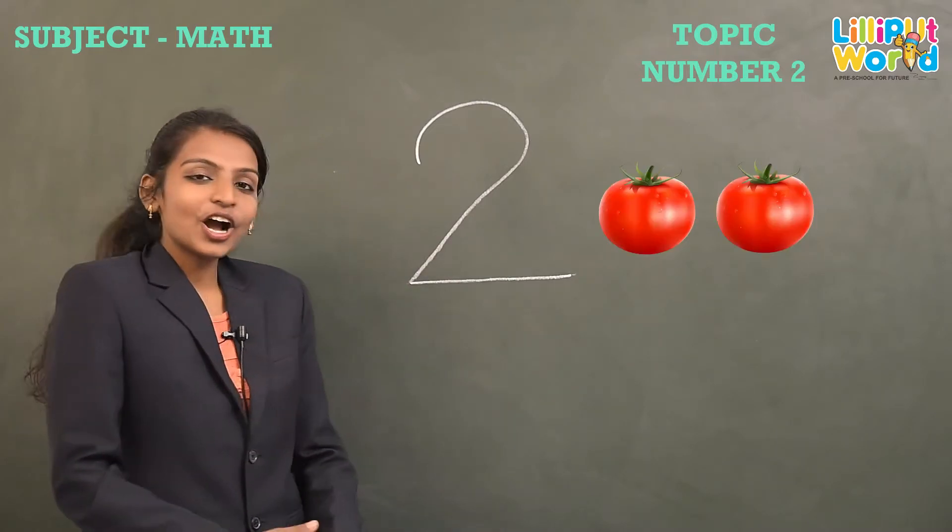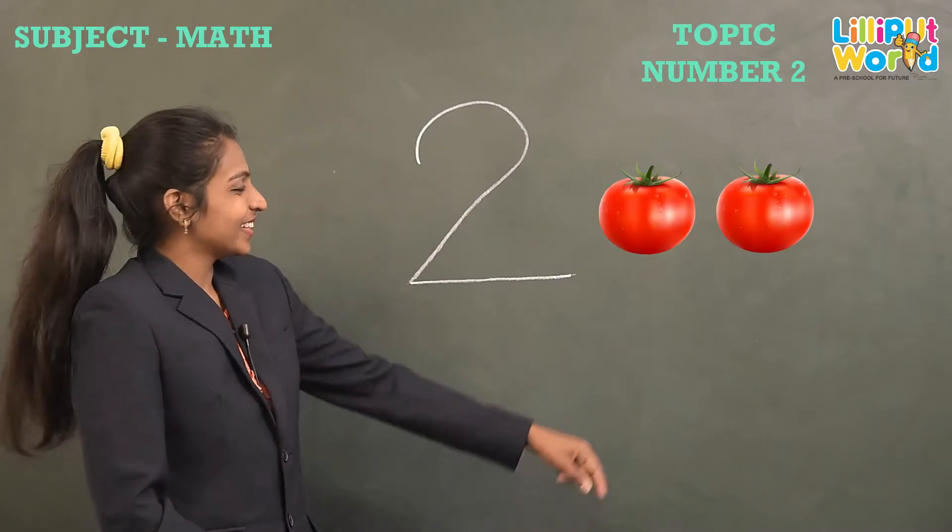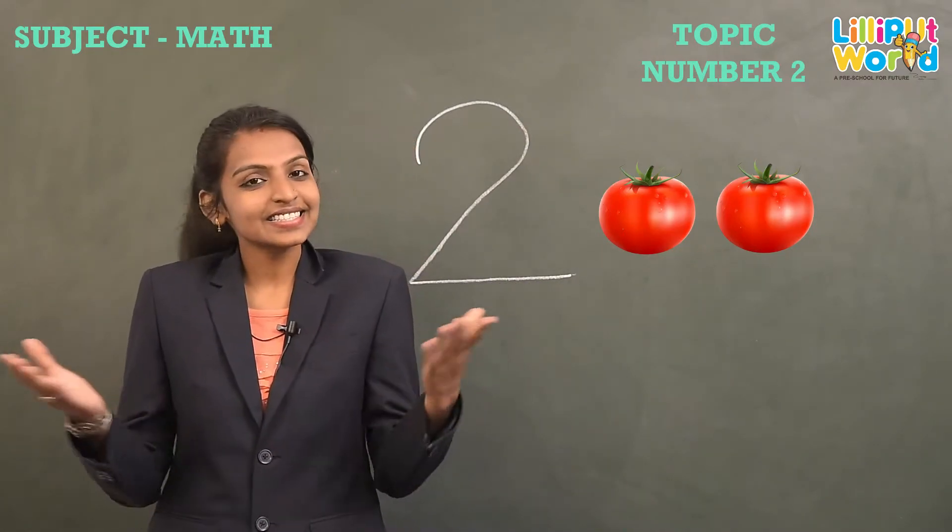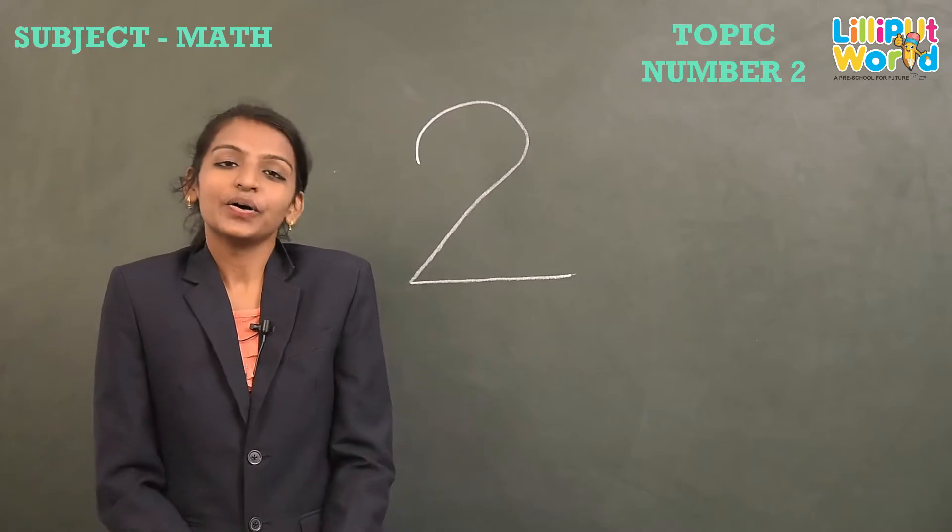Now let's count the objects of number 2. 1 and 2, that's it, only 2 objects, okay?